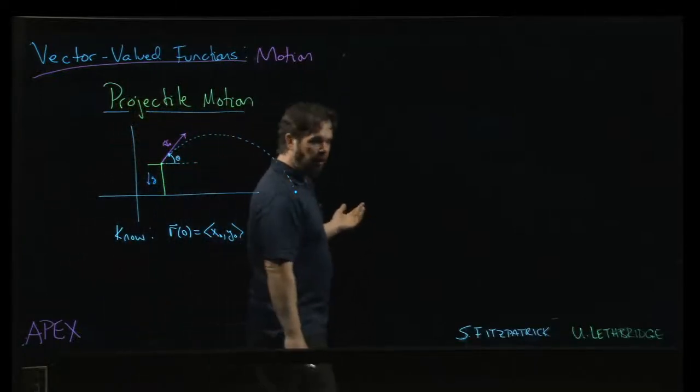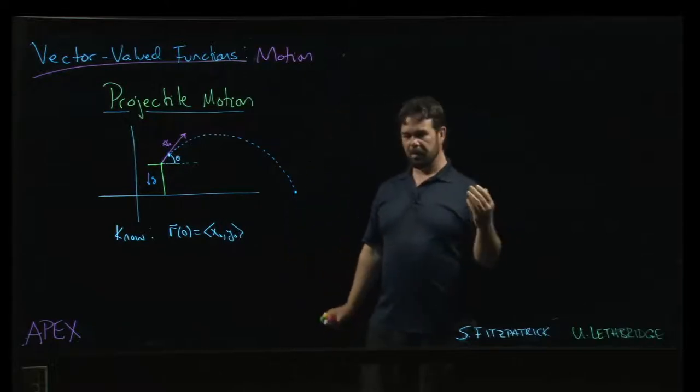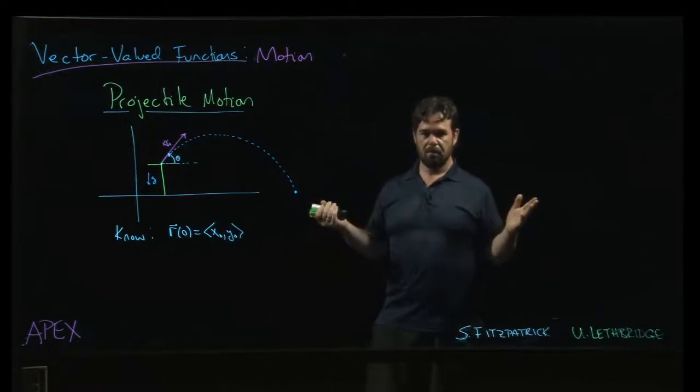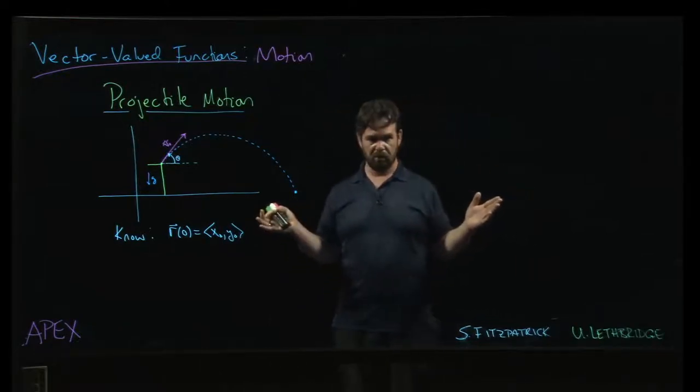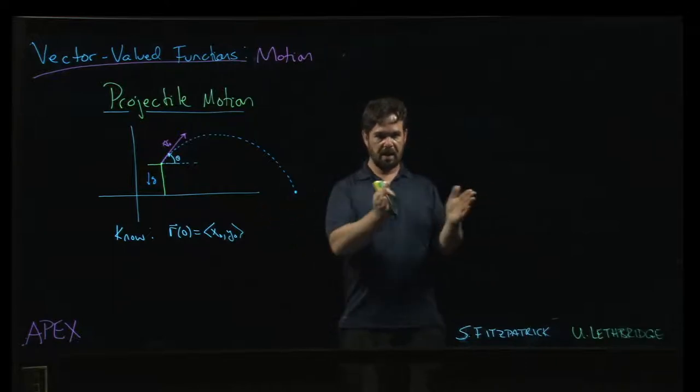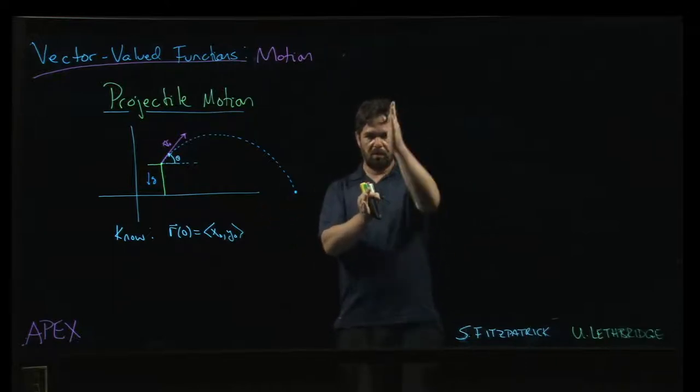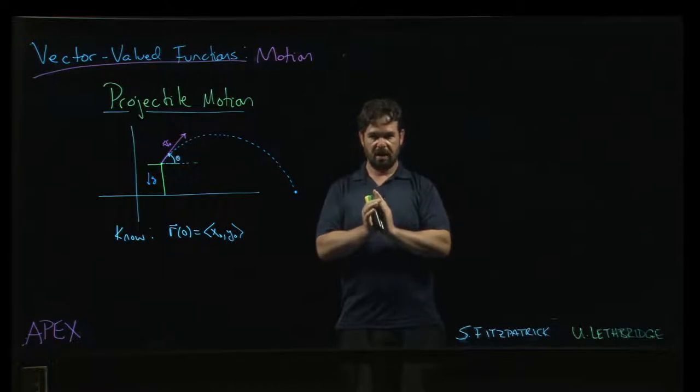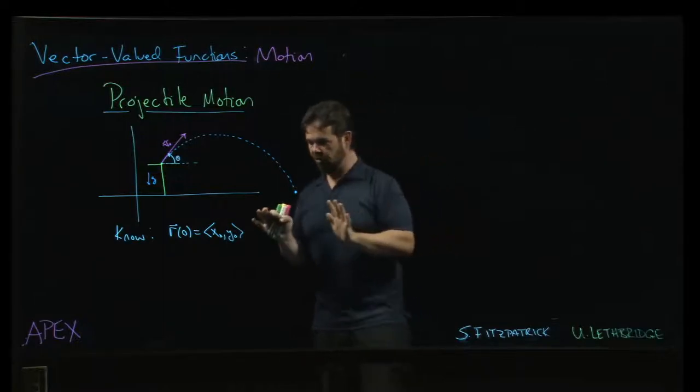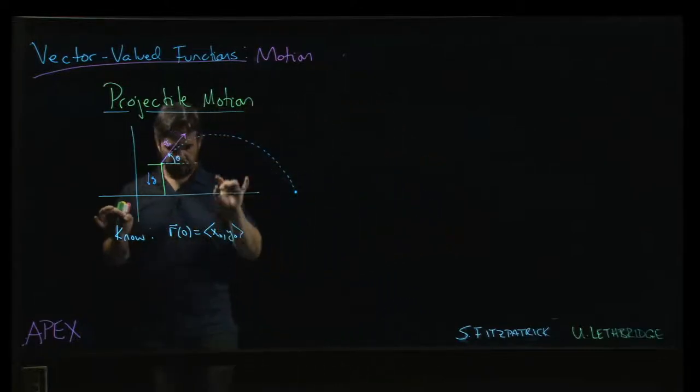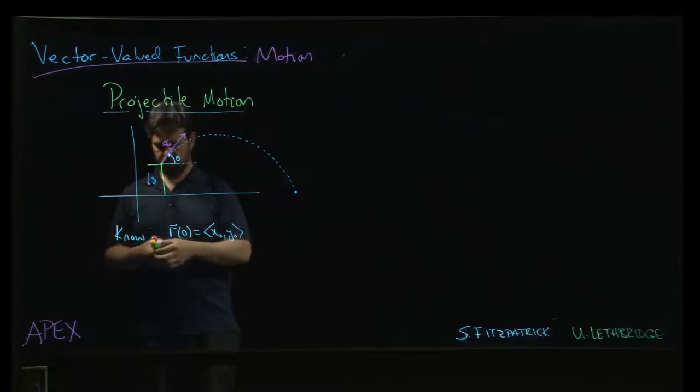Notice we're not putting a third variable in here. This should be a 3D problem, but we're going to assume that we've aimed things so that the thing we're aiming at is straight ahead. We're not accounting for crosswinds or anything like that. So we have an initial position.